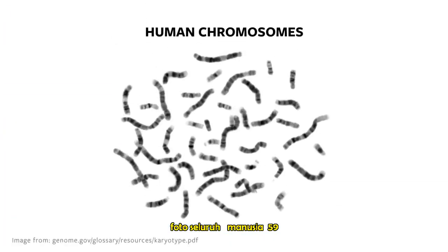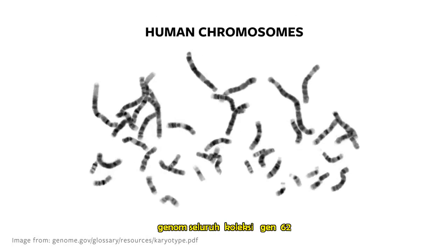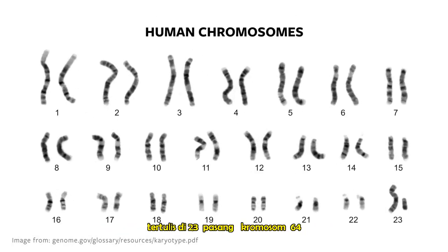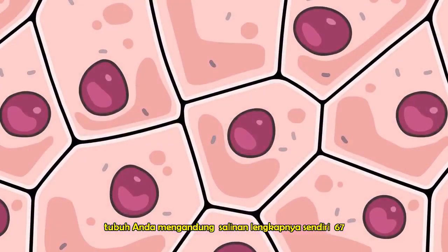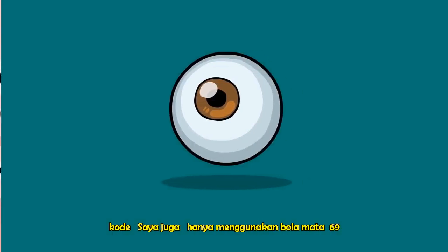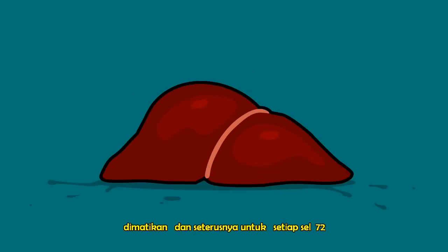Here is a photograph of an entire set of human chromosomes taken from a cell right as it was getting ready to reproduce. Your genome — the entire collection of genes that help make you who you are — is written across 23 pairs of chromosomes, that's 46 altogether. With very few exceptions, each cell in your body contains its own full copy of your chromosomes and your entire genetic code. Eyeball cells only use the eyeball cell genes, the rest are turned off; liver cells only use liver cell genes, the rest are turned off, and so on for each cell type.